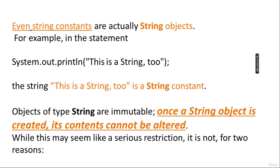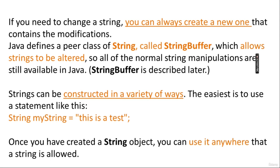Objects of type String are immutable — once a String object is created, its contents cannot be altered. Whenever you change or modify a String object, the new modified value is stored in a new variable at a new memory location; the original String object remains unchanged. While this may seem like a serious restriction, it is not, for two reasons: you can always create a new string that contains the modifications, and Java defines a peer class of String called StringBuffer in which strings can be altered.